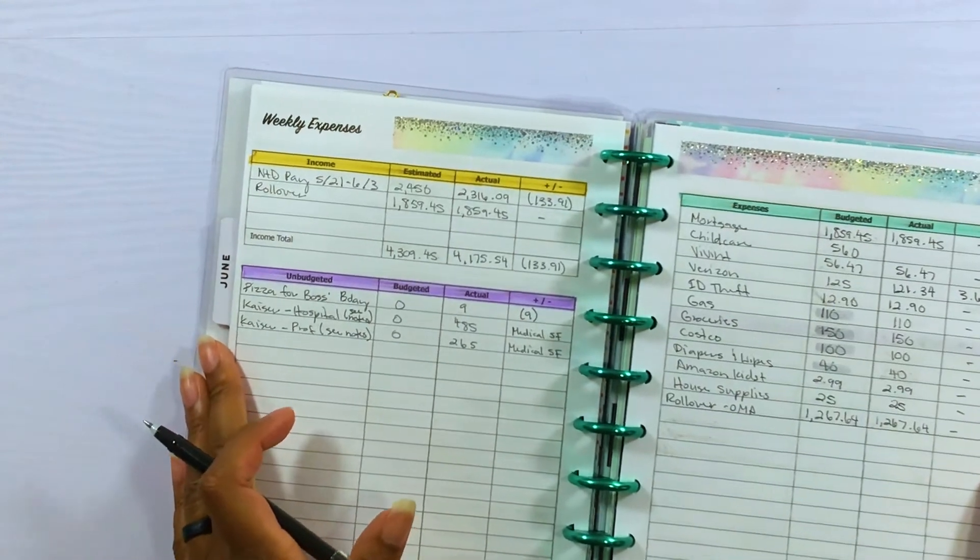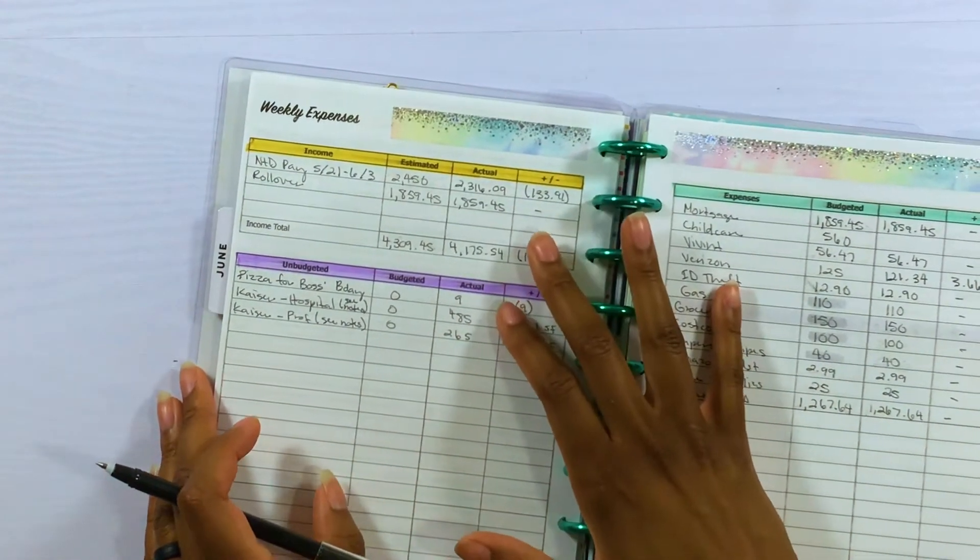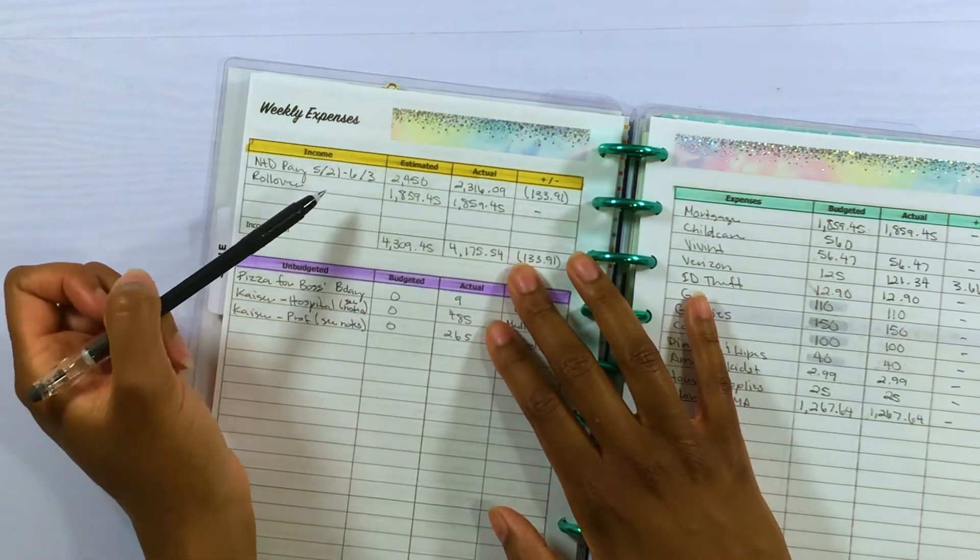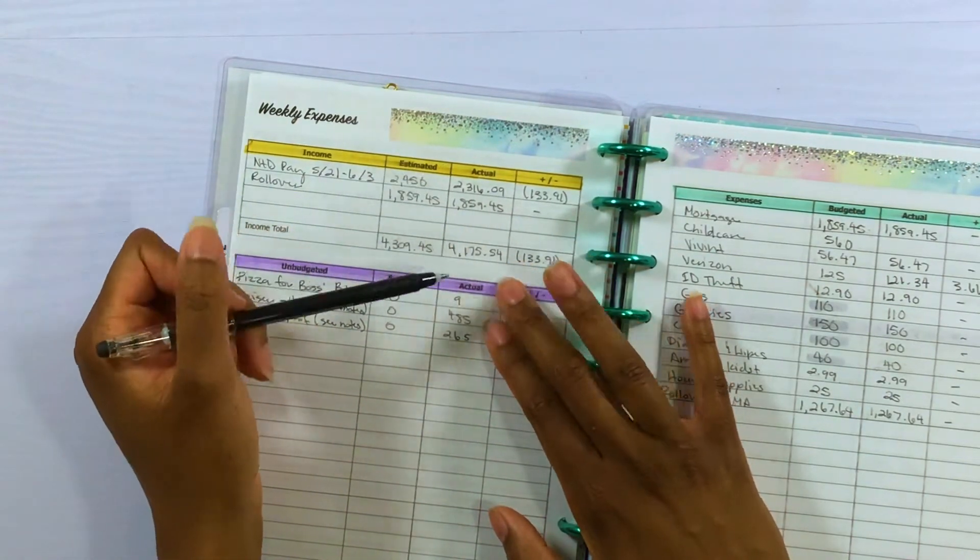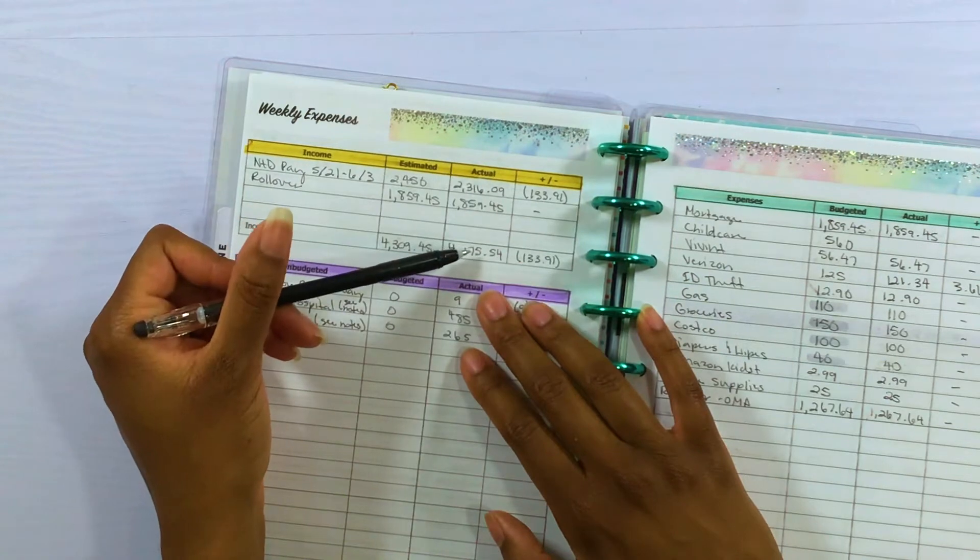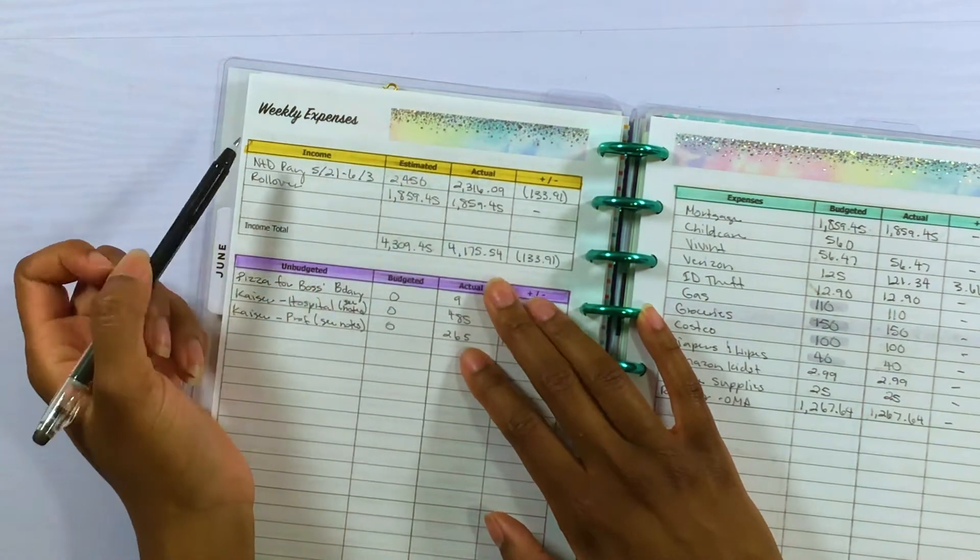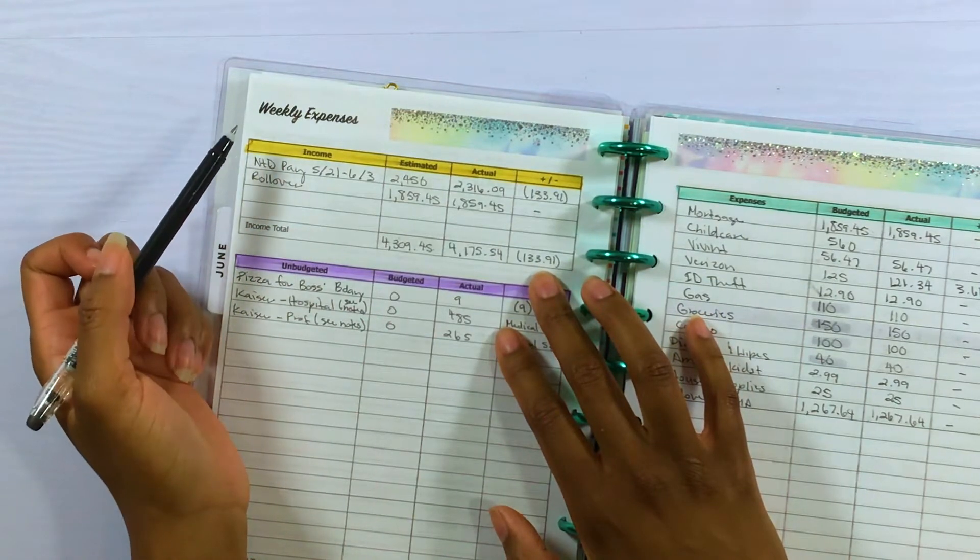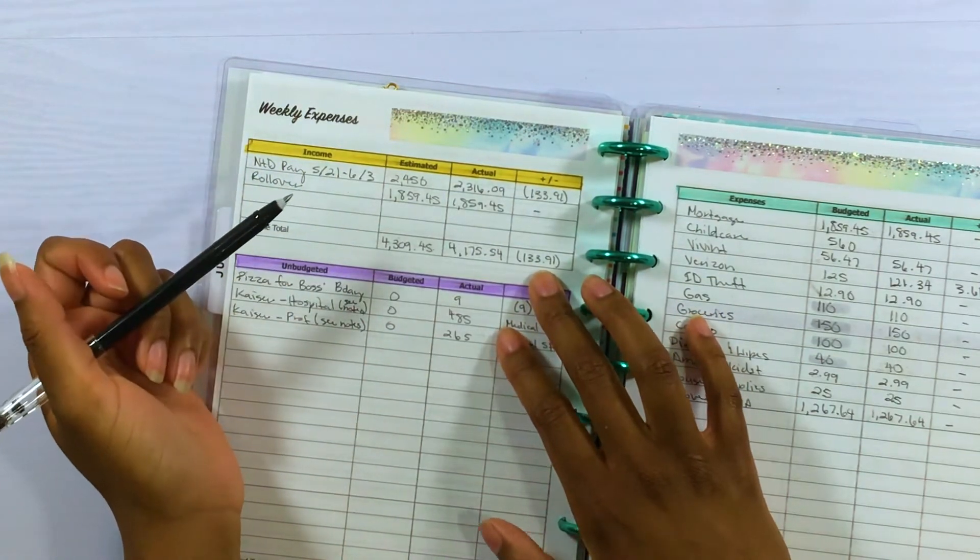All righty, so I already filled out most of this, so I'll just go over the updates. For this paycheck we got paid a total of $4,175.54, which is $133.91 less than what I was expecting us to bring in.